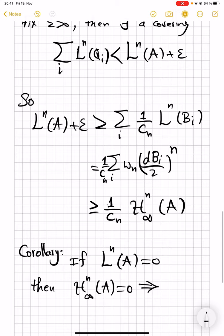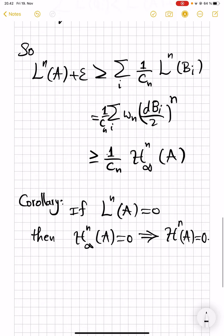But we've seen that in very broad generality, in any metric space, any set, this would imply that, in fact, H^n is 0. H^n, in general, could be much larger than H^n_∞, but the 0 case is special.